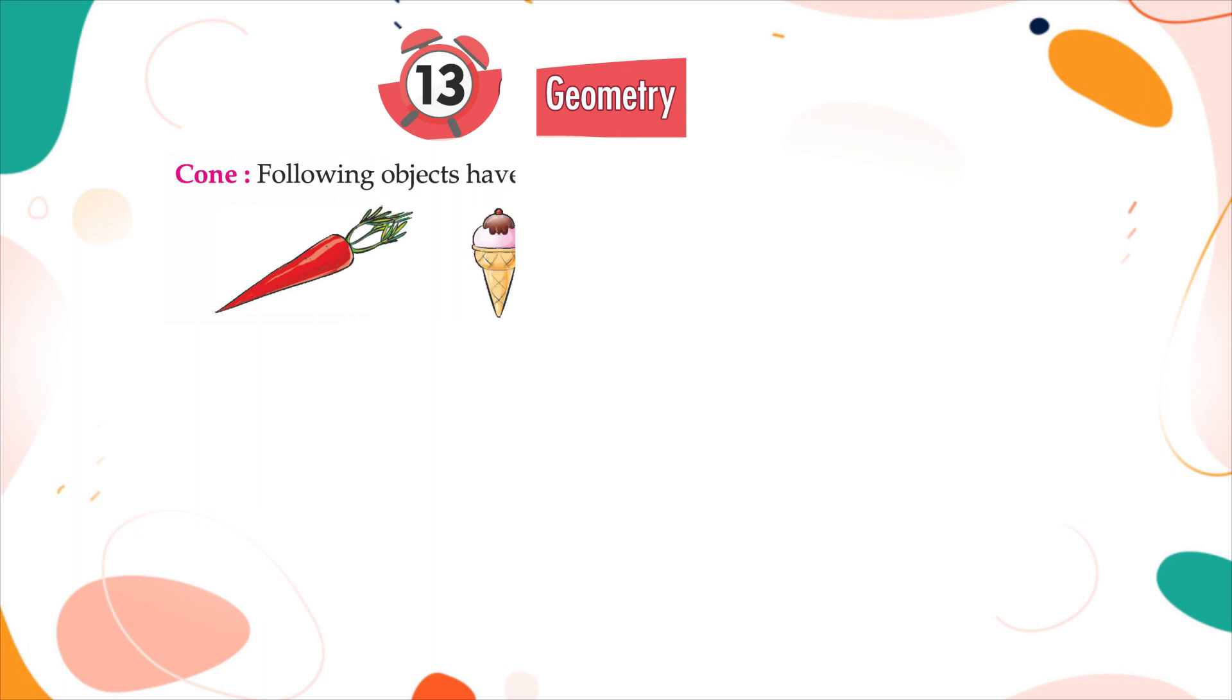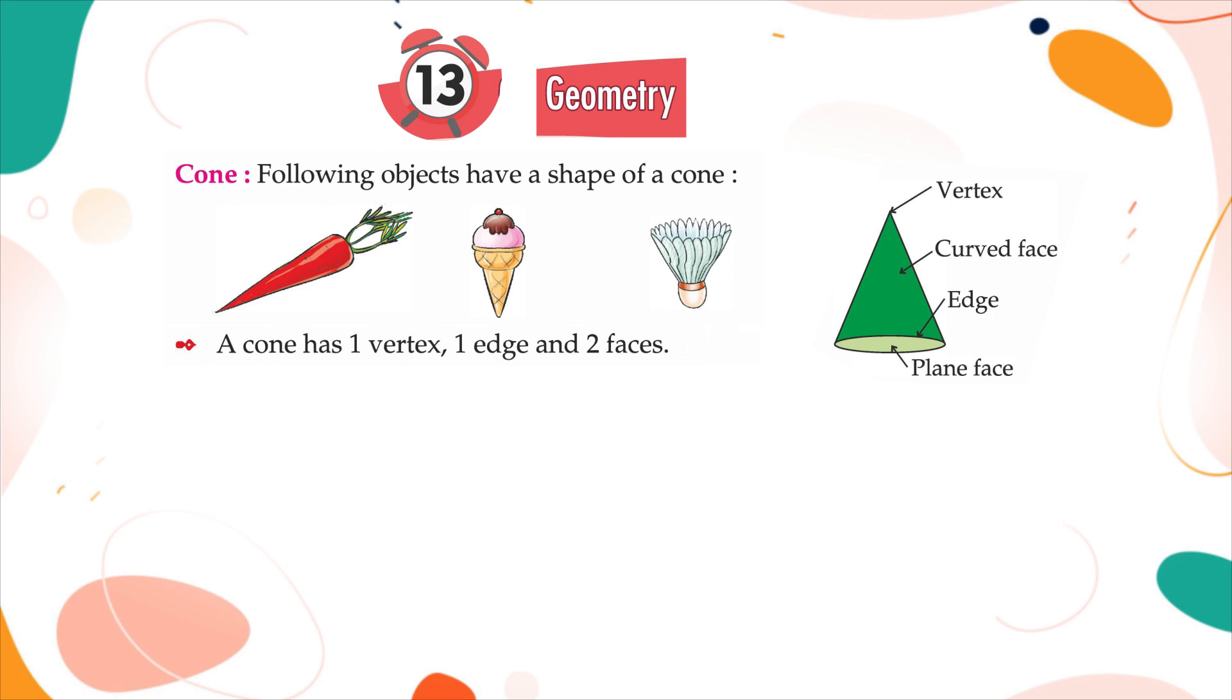Cone: Following objects have a shape of a cone. A cone has one vertex, one edge and two faces. One face of the cone is curved while the other is a plane.